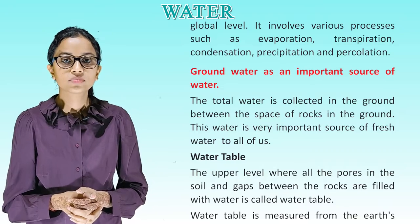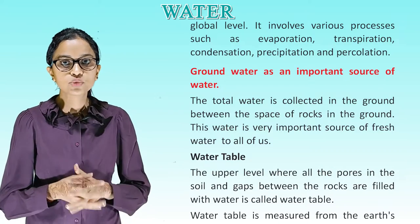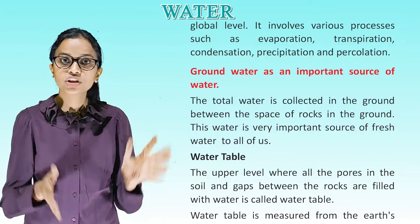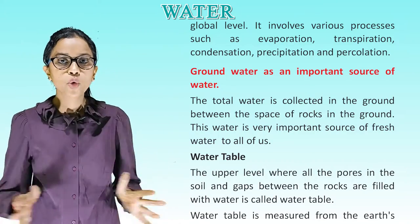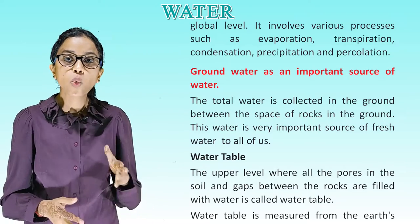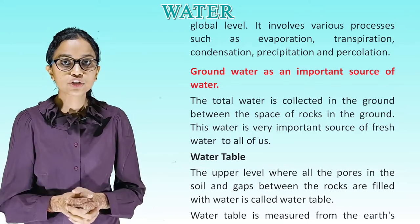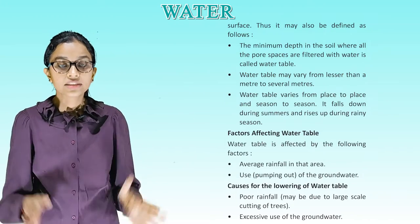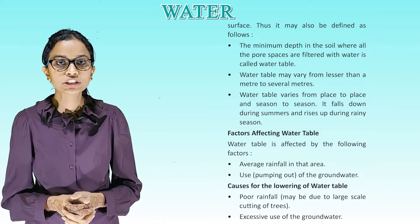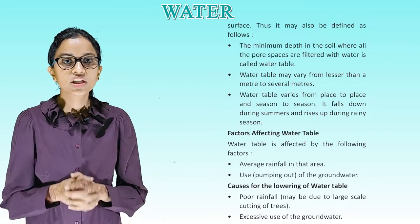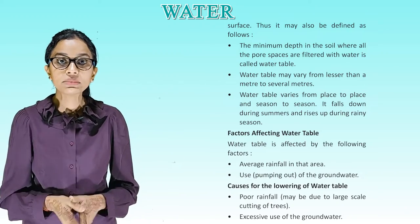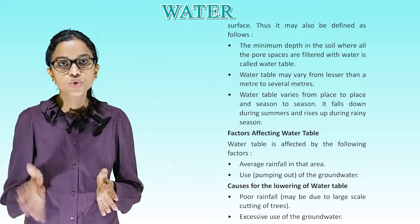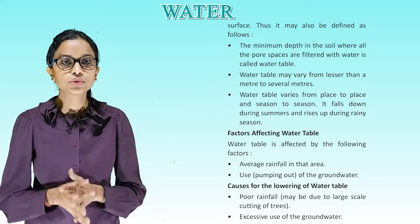Ground water as an important source of water. Water collected in the ground between the spaces of rocks is a very important source of fresh water to all of us. Water table. The minimum depth in the soil where all the pore spaces are filled with water is called the water table. Water table may vary from less than a meter to several meters. Water table varies from place to place and season to season. It falls down during summers and rises up during the rainy season.